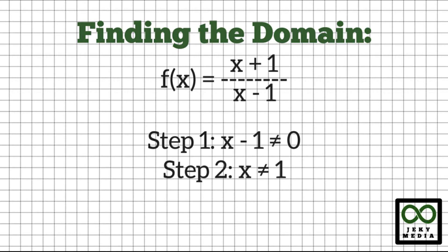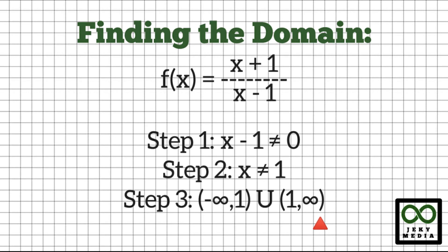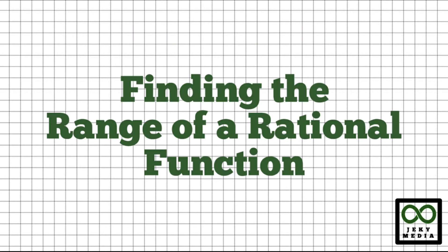Step 3: Let's represent the domain using interval notation: open parenthesis, negative infinity, comma, positive 1, close parenthesis, union, open parenthesis, positive 1, comma, positive infinity, close parenthesis. Next, let's find the range of a rational function.